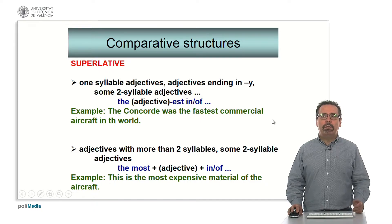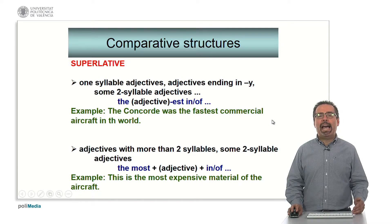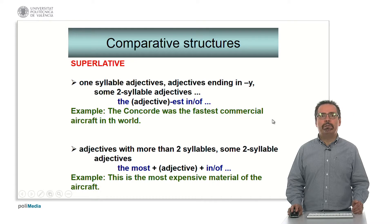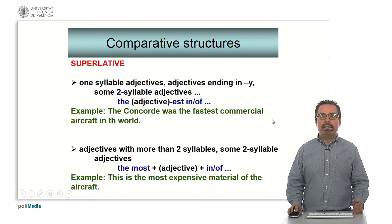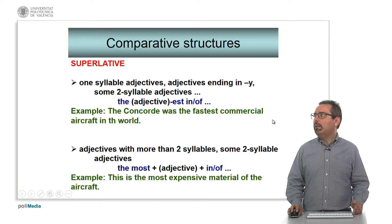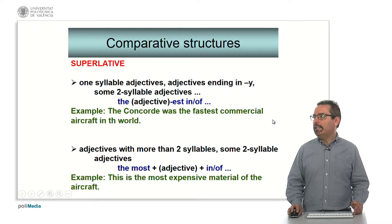For superlatives, when we use a superlative, we say that one product or object has the highest level of a property in a group. We also differentiate between short adjectives, in which case we use 'the' plus the suffix '-est', or longer adjectives with 'the most' plus the adjective plus 'in' or 'of'. For example, 'The Concorde has the fastest commercial aircraft in the world.' Or for longer adjectives, 'This is the most expensive material of the aircraft.'